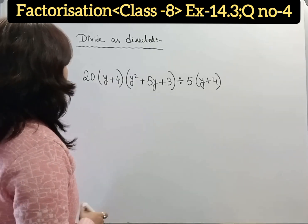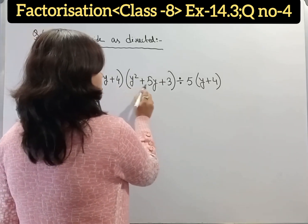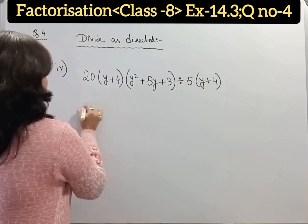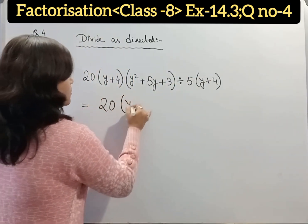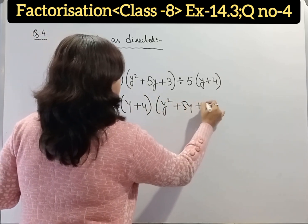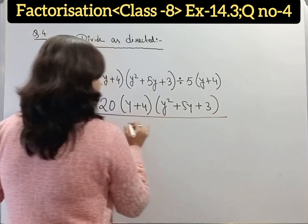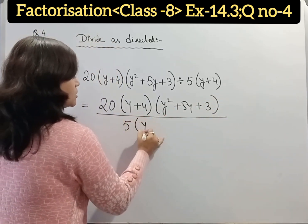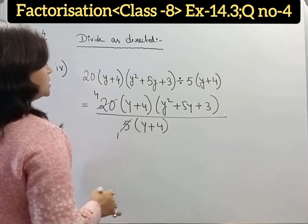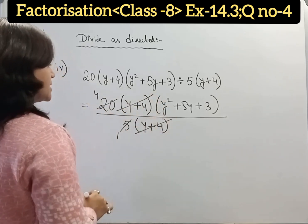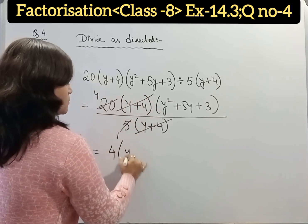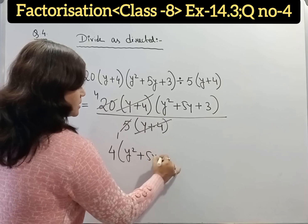Or, we can write one-half times r times (p + q). Now, question number 4: 20 times (y + 4) times (y² + 5y + 3) divided by 5 times (y + 4). Now, 5 times 4 is 20, and (y + 4) will get cancelled. So our answer is 4 times (y² + 5y + 3).